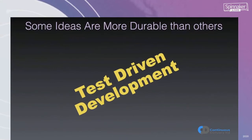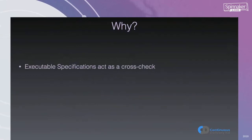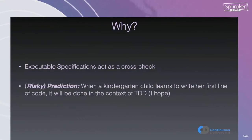One idea very close to my heart: I'm a long-time practitioner of test-driven development. Do I think TDD will still be around in a hundred years and driving development? I kind of encode this as orange rather than red — I hope so. I believe that test-driven development is one of the few genuine disciplines we can genuinely consider to be an engineering discipline in the way we approach solving problems in software. We use tests as executable specification to cross-check the work we're doing. Without that, we're guessing and crossing our fingers hoping the software works. My very risky prediction is that when a kindergarten child learns to write her first line of code in a hundred years' time, it will be done in the context of test-driven development.